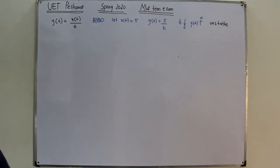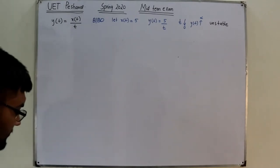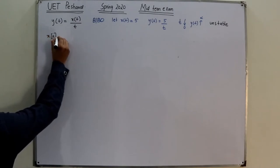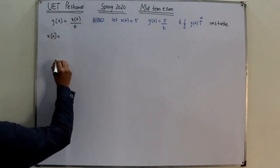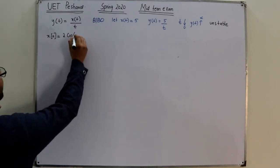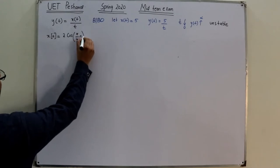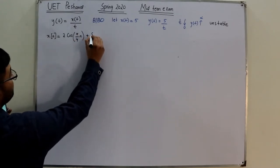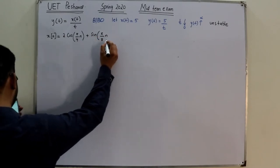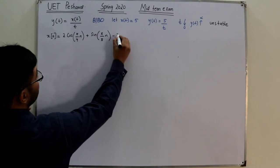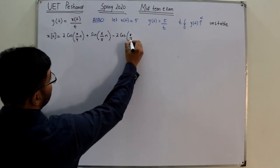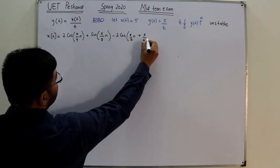The next question: x(n) equals 2·cos(π/4·n) plus sin(π/8·n) minus 2·cos(π/2·n + π/6). We are asked to find the fundamental period of this signal, or determine if it is not periodic.